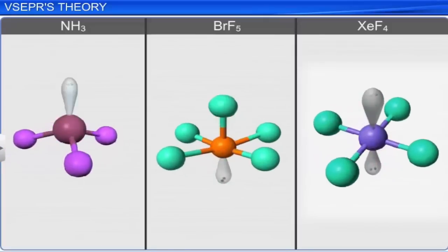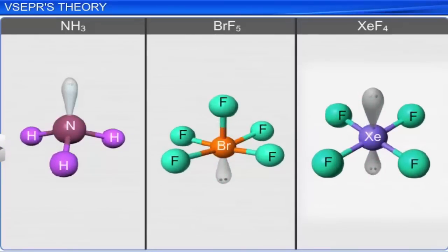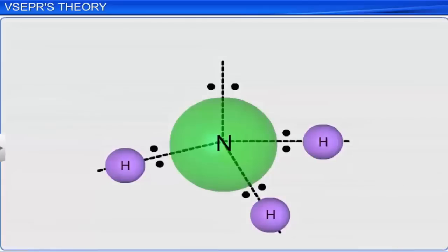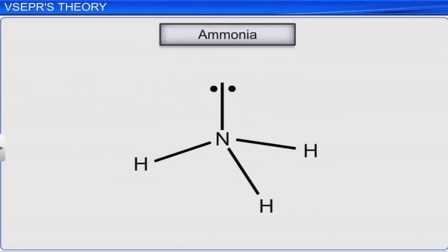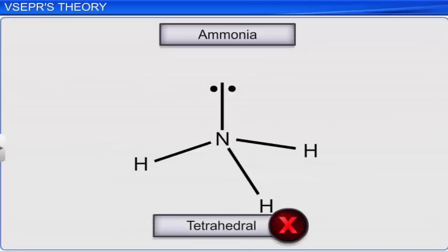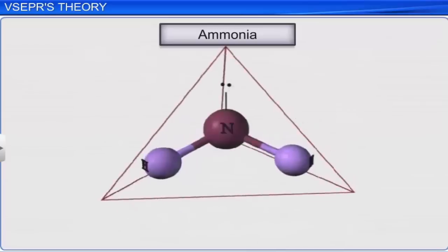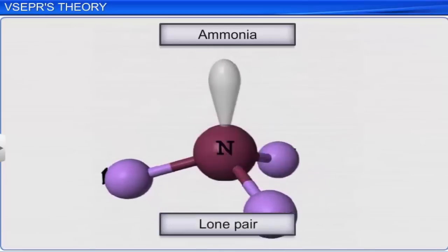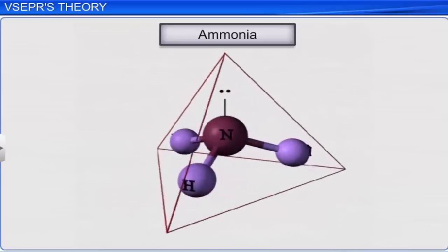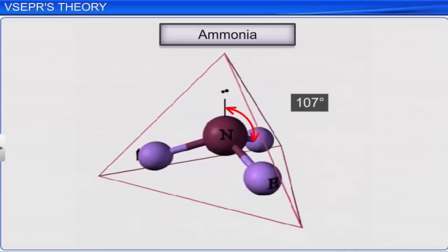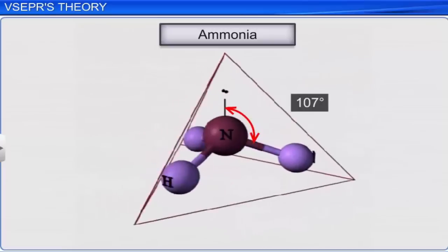Now let's analyze the shapes of some molecules with reference to their valence electron pairs. In ammonia, the central nitrogen atom has three bond pairs of electrons and one lone pair of electrons. The ideal geometry of the molecule with four pairs of electrons would be tetrahedral. However, the lone pair of electrons repulses the N–H bonded electron pairs, thus reducing their bond angle to 107 degrees and giving the molecule a pyramidal shape.